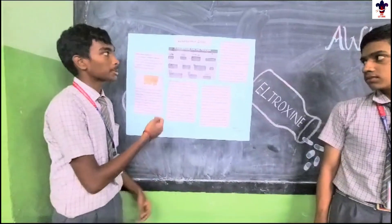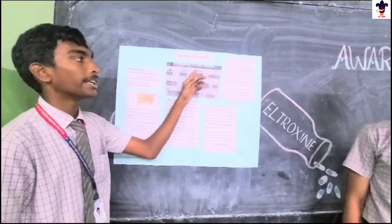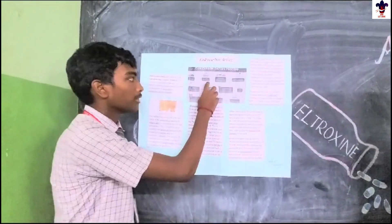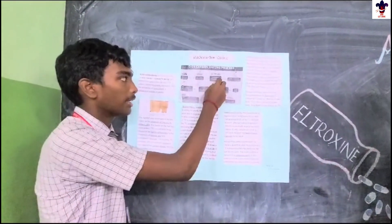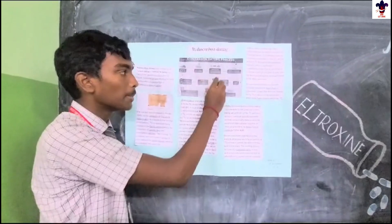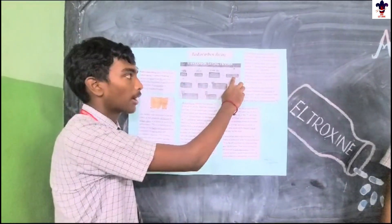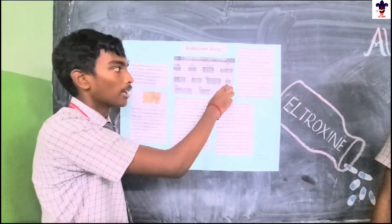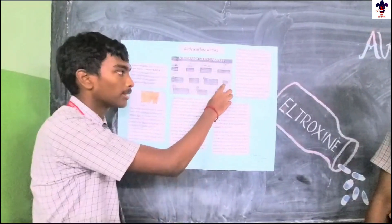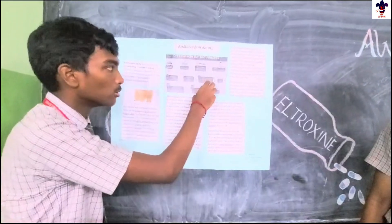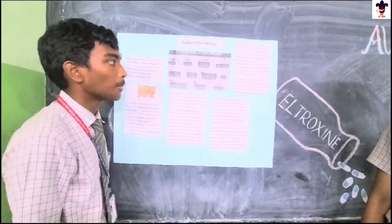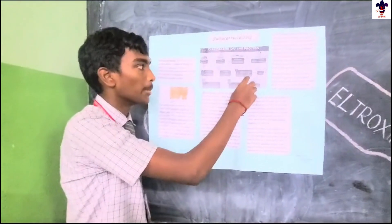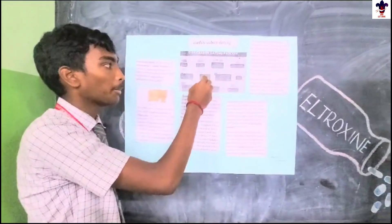I am going to explain the C14 carbon dating process. First, you need to excavate the bone. Then you need to clean the bone and take a small sample of it. For treatment, you need to add some weak acid. Then you freeze the dried bone. Then you need to add some chemicals to convert all the carbon present into benzene.